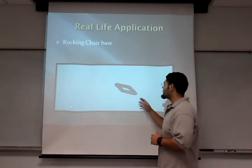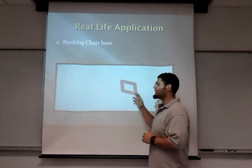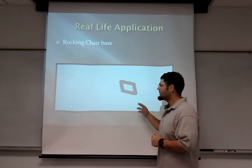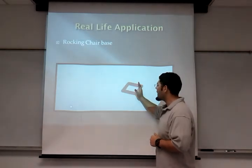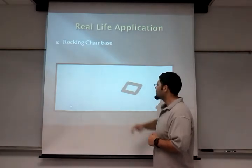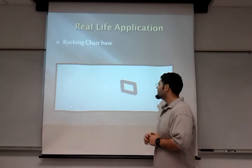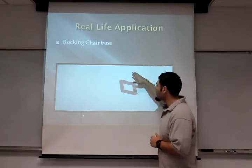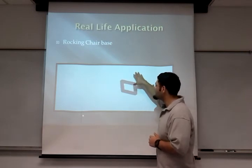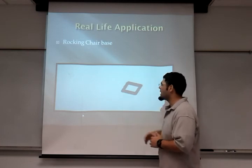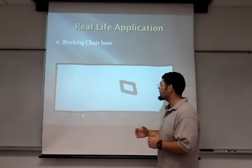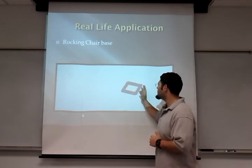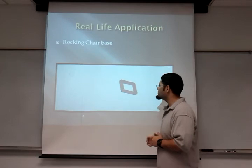Here we made a 4-bar mechanism that can be used in a rocking chair. As you can see, it moves back and forth with its limits. This can be used for a rocking chair — this is the inside mechanism. All that you need is the outside, like the sofa, as well. So it just goes back and forth.